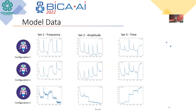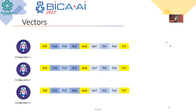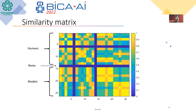We then did the same with the model — the same experiment with the same changes in frequency, amplitude, and time — and collected data for configuration 1, configuration 2, etc. One configuration used average memory and another used loss memory. We also changed the level of the circadian algorithm, then created vectors and a similarity matrix comparing humans versus humans, models versus models, and in the red square, the comparison between humans and models. We can see that the model with loss memory is more similar to humans than the model with average memory.